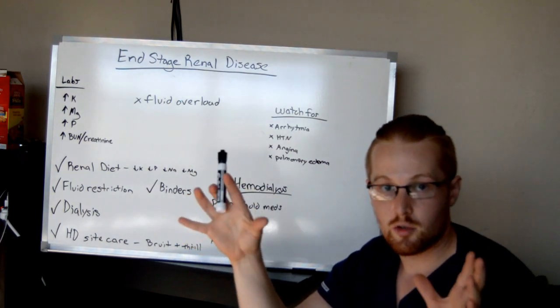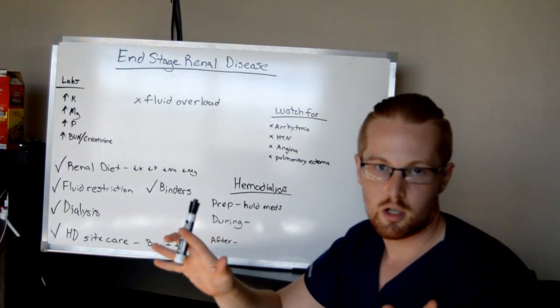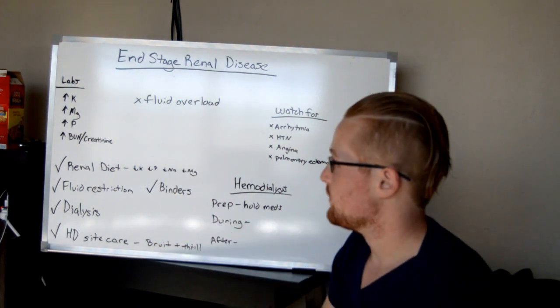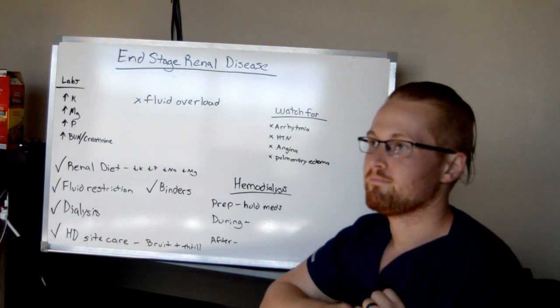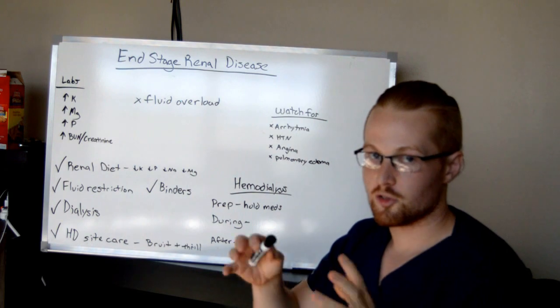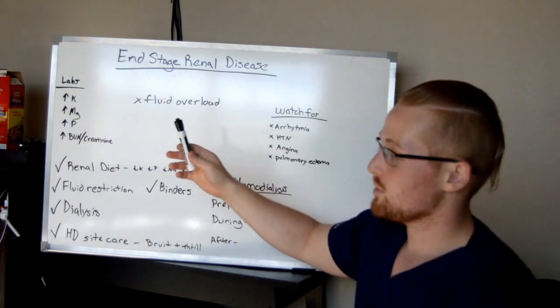End-stage renal disease is chronic kidney disease except to the extremes where the kidneys are no longer functioning or just have very little function. So it has all the same risk factors and causes as chronic kidney disease, signs and symptoms. It's just to the extreme.